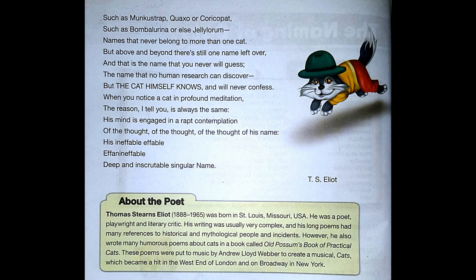such as Bombalurina or else Jellylorum — names that never belong to more than one cat. But above and beyond there's still one name left over, and that is the name that you never will guess, the name that no human research can discover, but the cat himself knows and will never confess. When you notice a cat in profound meditation, the reason I tell you is always the same — his mind is engaged in a rapt contemplation of the thought, of the thought, of the thought of his name: